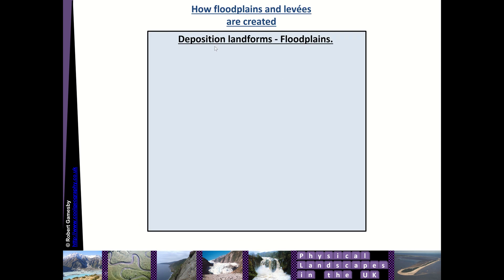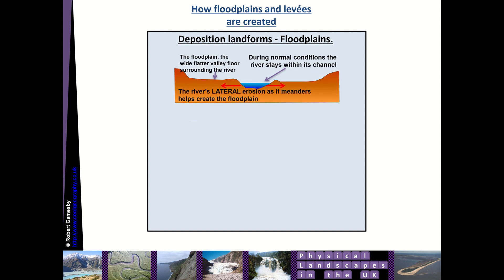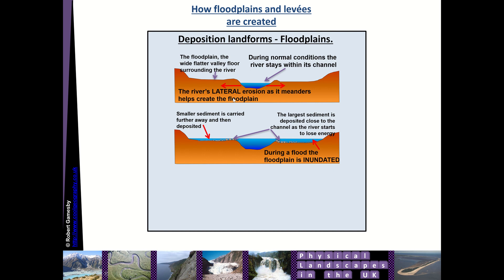Floodplains are created primarily by deposition. We do get lateral erosion from meanders that flattens out the floodplain — the river meanders side to side, cutting into the sides through hydraulic action and abrasion, which flattens things out. During normal conditions the river stays within its channel, but during a flood the floodplain is inundated and sediment is carried away from the channel. The larger sediment is deposited first as the river loses energy and slows down.